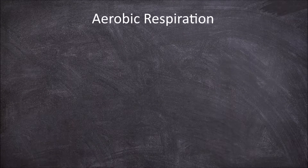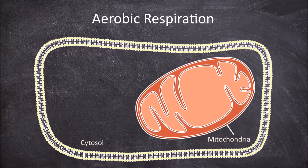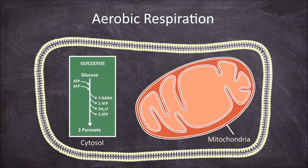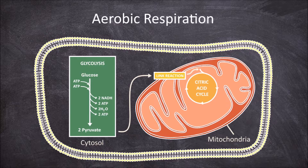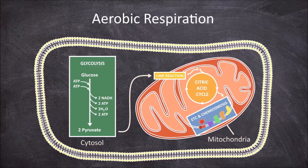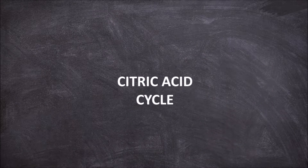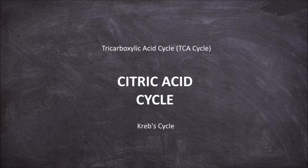Aerobic respiration occurs within cells. It starts with glycolysis in the cytosol of the cell, then goes through the link reaction moving into the matrix of the mitochondria, then through the citric acid cycle within the mitochondria matrix, and finally through the electron transport chain and chemiosmosis in the inner mitochondrial membrane producing energy in the form of ATP. In this video we are going to look at the third process — the citric acid cycle, also known as the tricarboxylic acid cycle, TCA cycle, or Krebs cycle.